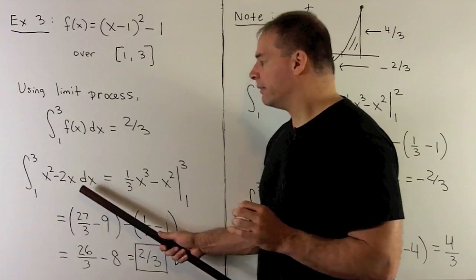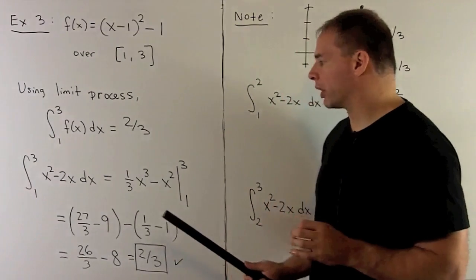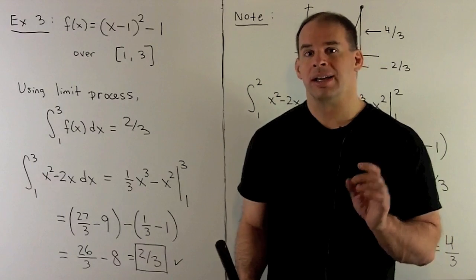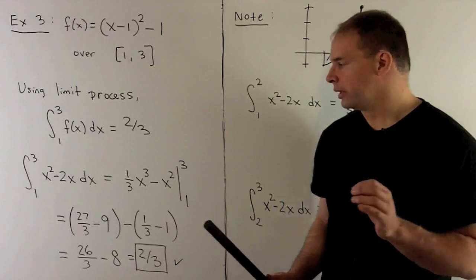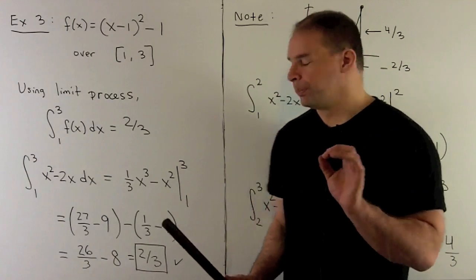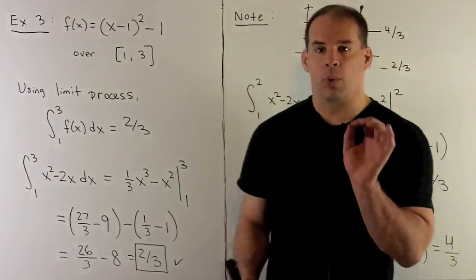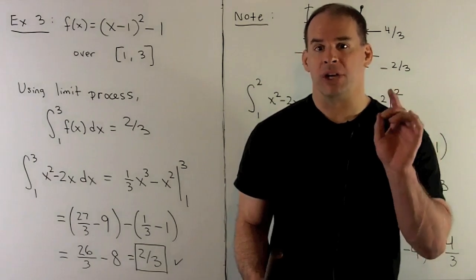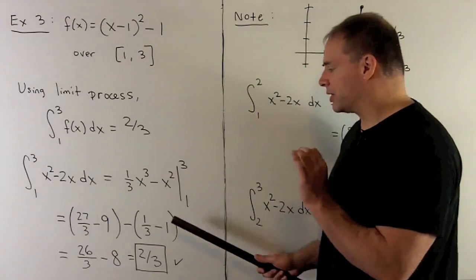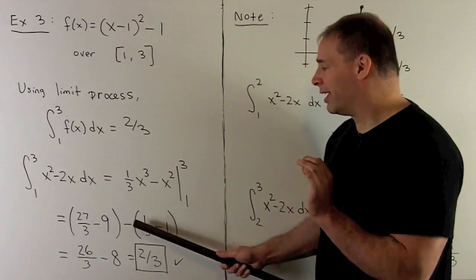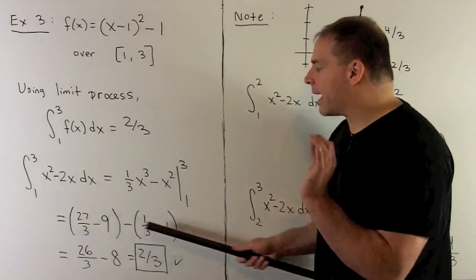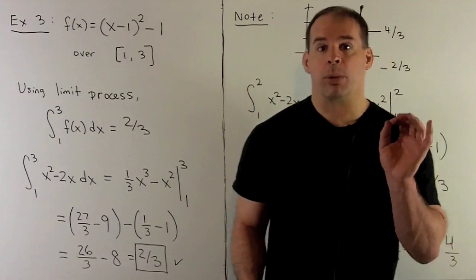Using the Fundamental Theorem of Calculus: first, we find an antiderivative. We add one to the exponents and flip over, getting one-third x³ minus x². We evaluate at three and one and take the difference. A really important thing to note: when working with functions with many parts, make sure you use parentheses. Many problems go wrong because we haven't put parentheses on the second term and that minus sign doesn't get distributed correctly. When we work this out, we get back the negative two-thirds that we were promised.